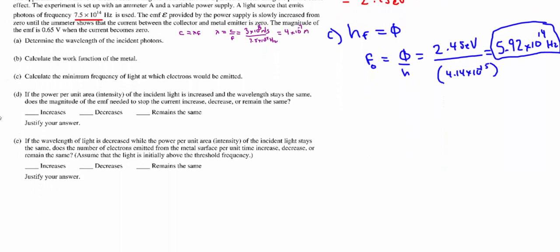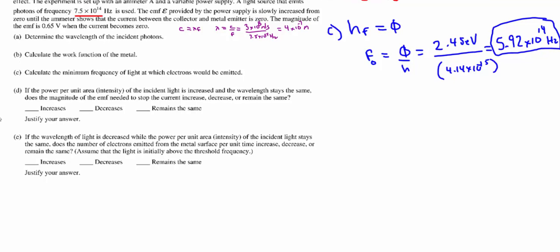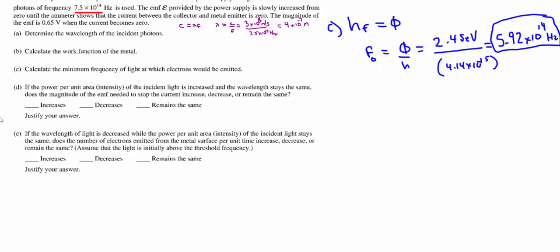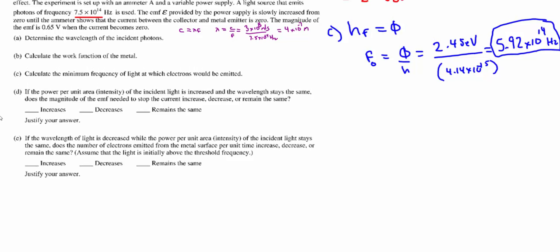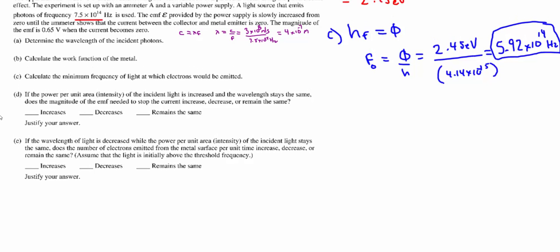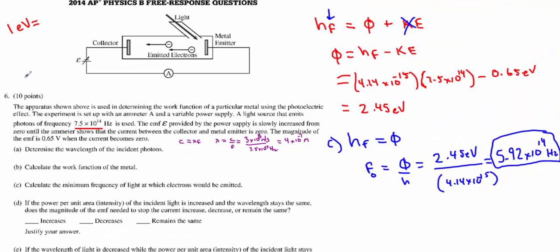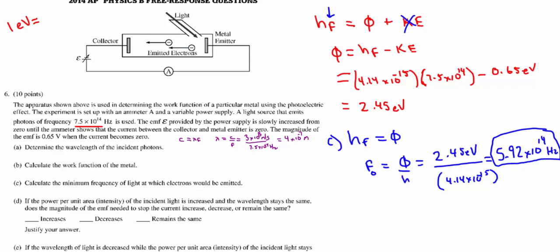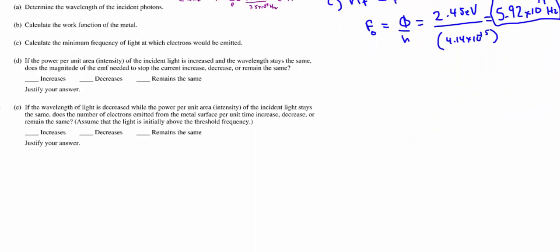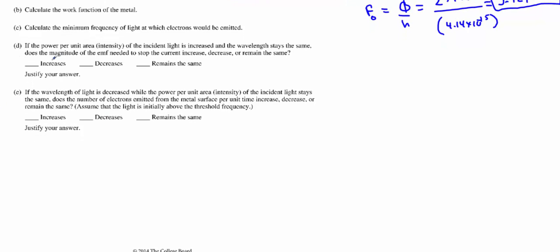Part D: The power per unit area of the incident light is increased, so we're going to increase the intensity, and the wavelength stays the same. So we're not going to change the wavelength or the frequency. We want to know, does the EMF, is the requirement to stop the electrons going to go up or down. Ultimately what it's asking you is will the electrons gain more energy or not. And this is a great way of determining do you understand the photoelectric effect and the differences between classical physics and modern physics. And the answer is, it will remain the same.